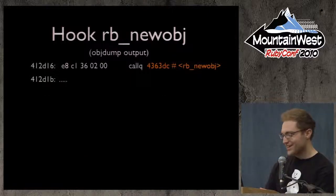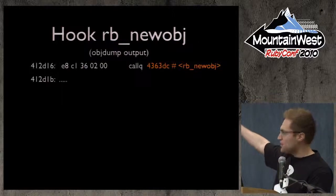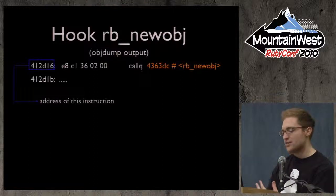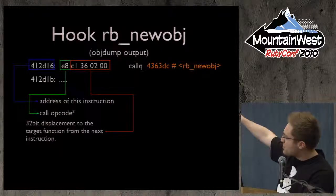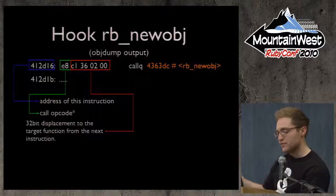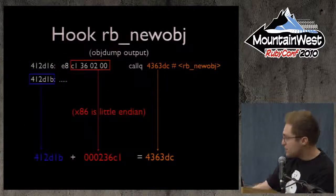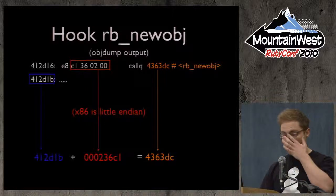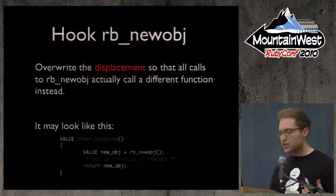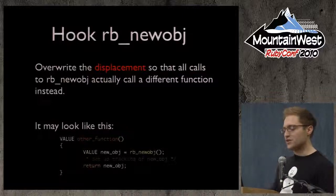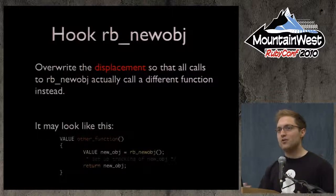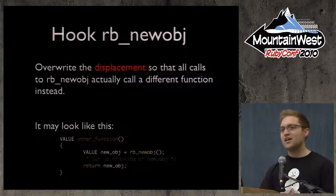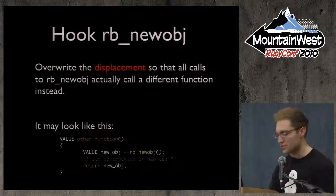You disassemble Ruby and find some function calling rb_newobj. The address of that instruction is on the left in blue. That one byte is the call opcode, and the next four bytes are the 32-bit displacement — that's what we need to overwrite. The absolute address of rb_newobj is calculated by adding the displacement to the next instruction pointer. All we need to do is overwrite that displacement so all calls to rb_newobj call our handler instead. Our handler calls rb_newobj itself, does something to track the object, then returns the object — if we don't actually call rb_newobj, the VM will break because it expected memory for an object.